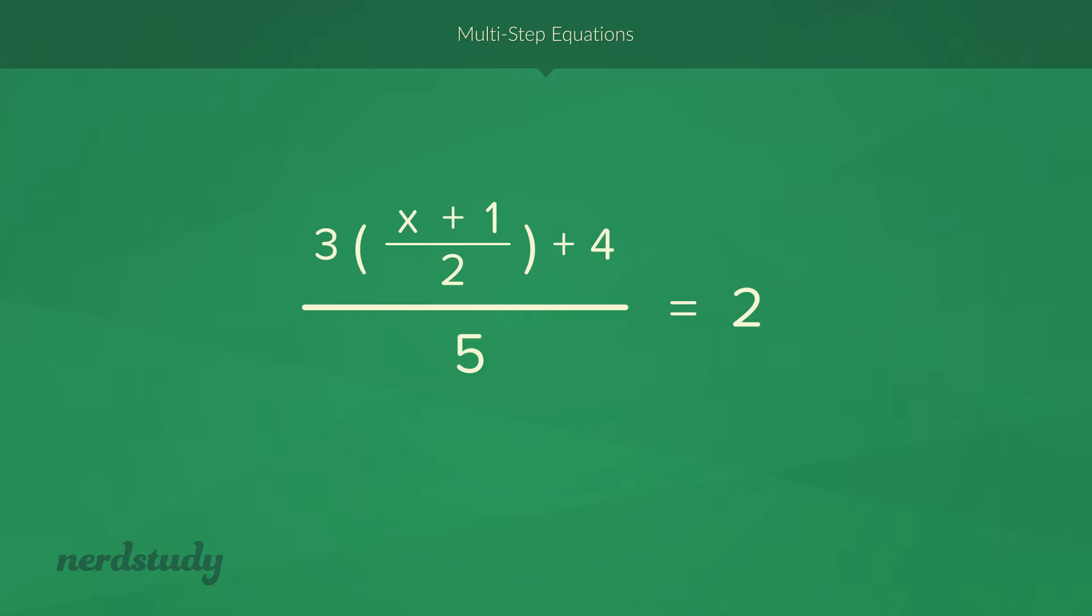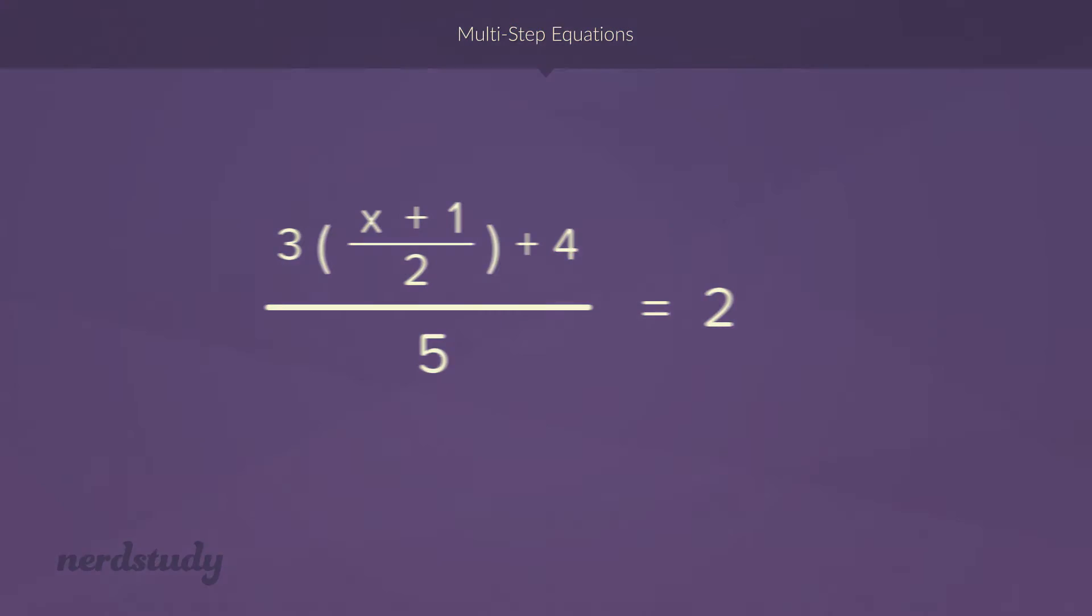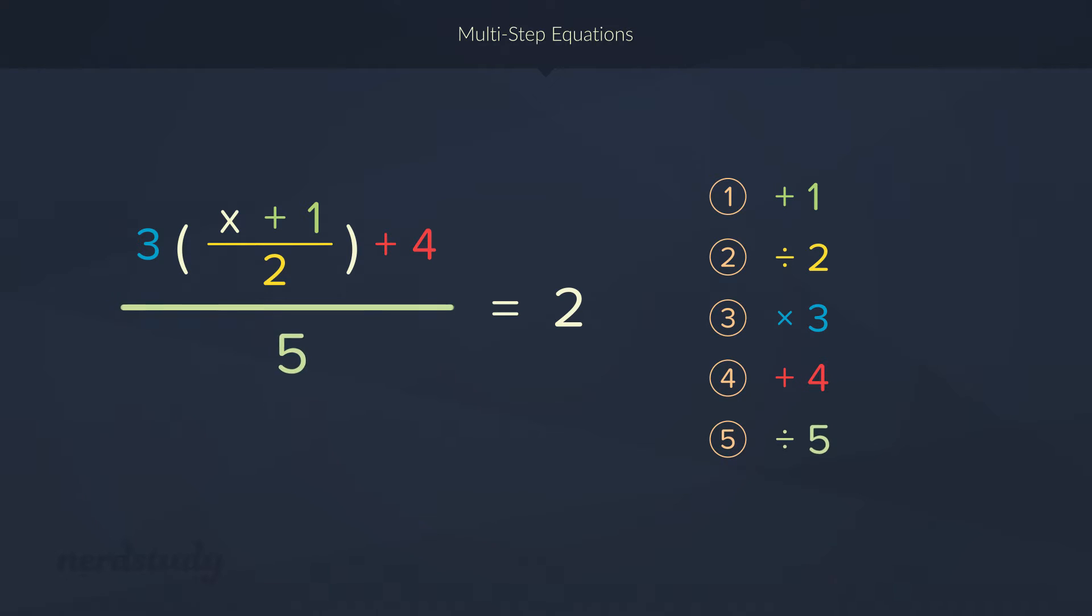Okay. So, let's think about this. If x was a number and I wanted to simplify the left side, what would I do first? Well, BEDMAS would tell me to add by 1 first, then divide by 2, then multiply by 3, then add by 4, and lastly divide by 5.